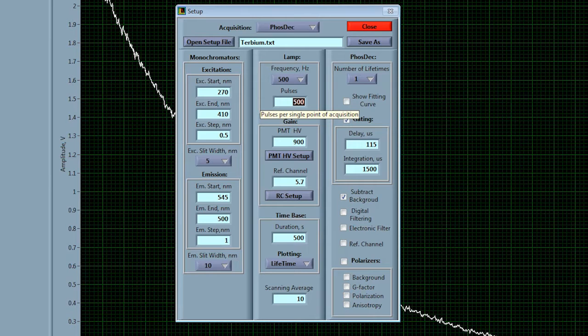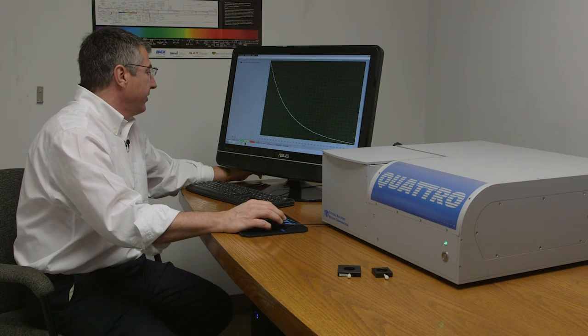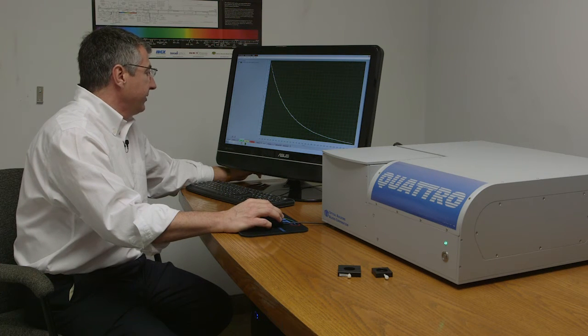However, if we go back to the setup panel we can actually, for a number of pulses, just choose only one pulse. What we're saying is we only want to flash the lamp once. We want to collect the entire decay curve that results from that one single microsecond flash.